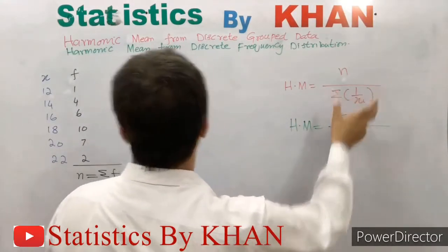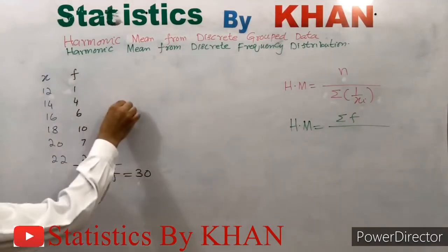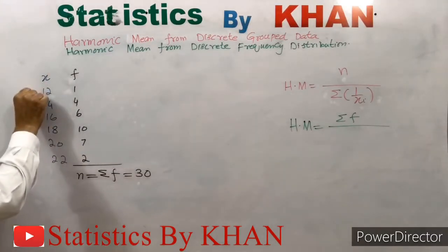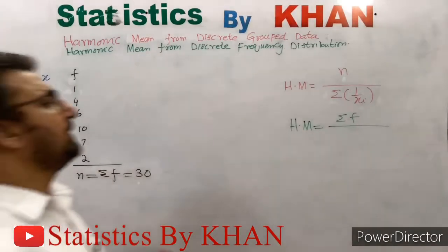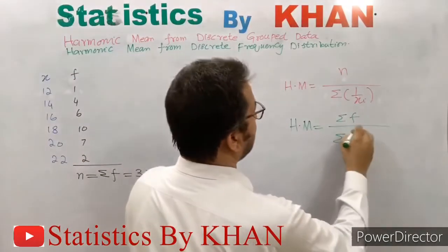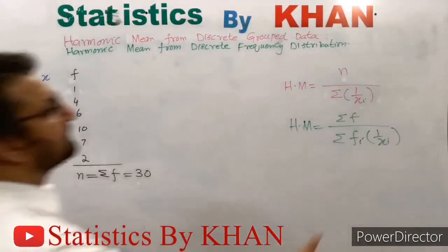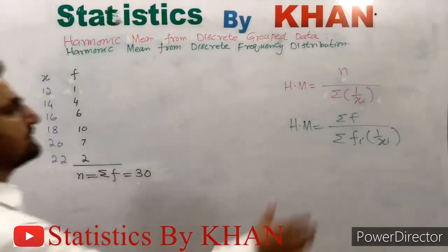In the denominator of the original formula, there is summation of 1 over xi, but that was for individual data. Since we now have a frequency distribution, we must consider the frequencies as well. To get the sum of all 30 reciprocated observations, we multiply the reciprocal of each observation by its corresponding frequency. Thus, the formula becomes: Harmonic Mean = summation f divided by summation(fi × 1/xi).